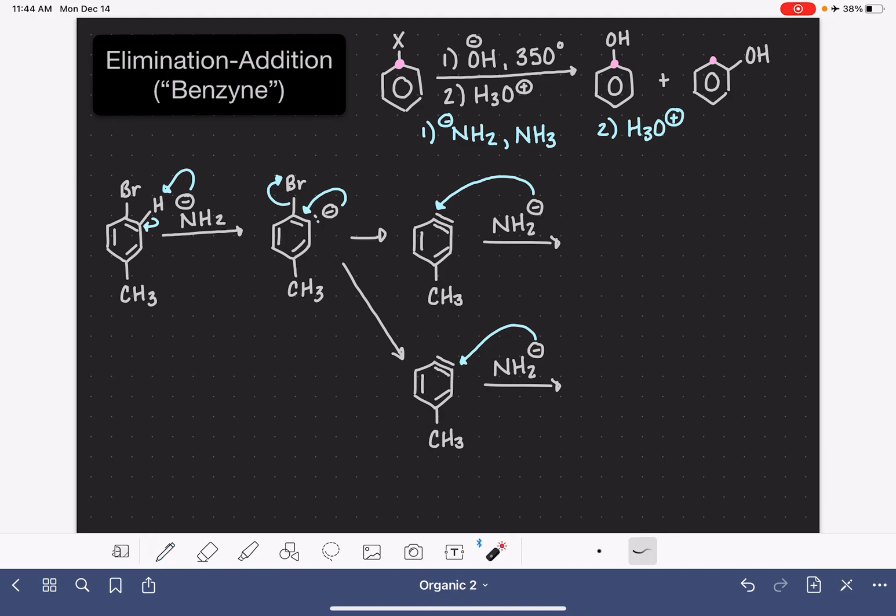When the amide attacks that triple bond, it's going to open that triple bond back up. Depending which way it goes, it's just going to depend on where the attack is. And so then our next intermediate, we're now back to a double bond. In this first example, I attacked the amide up at the top, replacing the bromine.